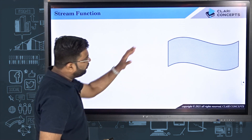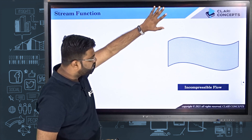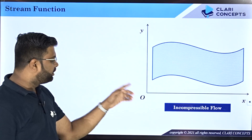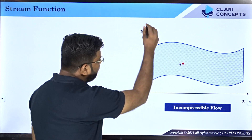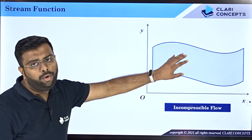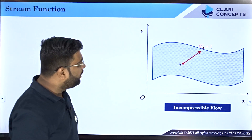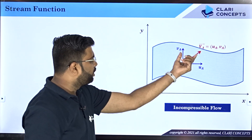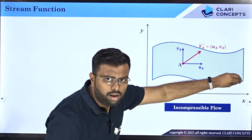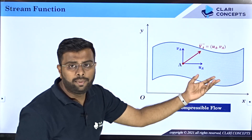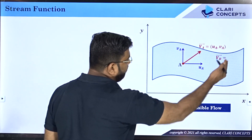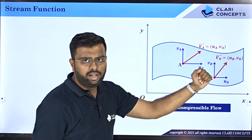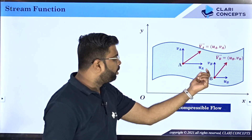Let's say we have fluid flowing in some direction and the flow is incompressible. I define a Cartesian coordinate system x and y with an origin. At point A, I find a fluid particle with velocity vA, which has two components: u along x and v along y. Similarly at another point B, the velocity vB has components uB and vB — so velocity is changing with respect to space.